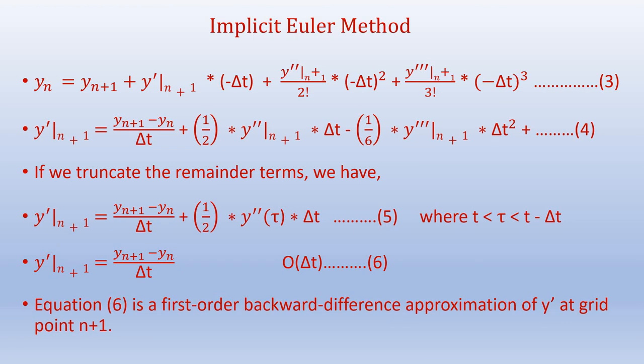When we rearrange equation 3, y dash n plus 1 equals y n plus 1 minus y n over delta t, plus half times y double dash of n plus 1 times delta t, minus 1 over 6 times y triple dash at n plus 1 times delta t squared.